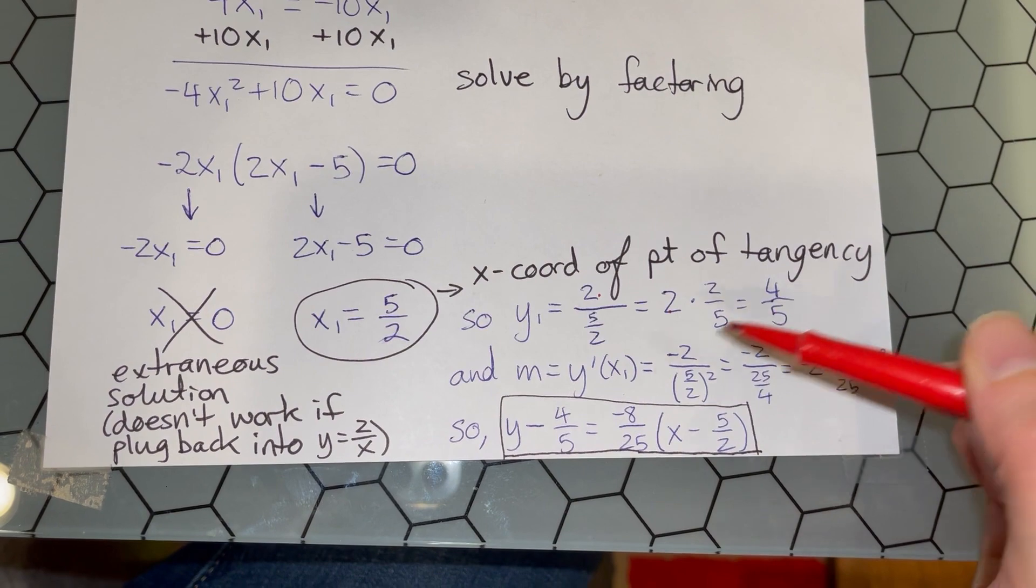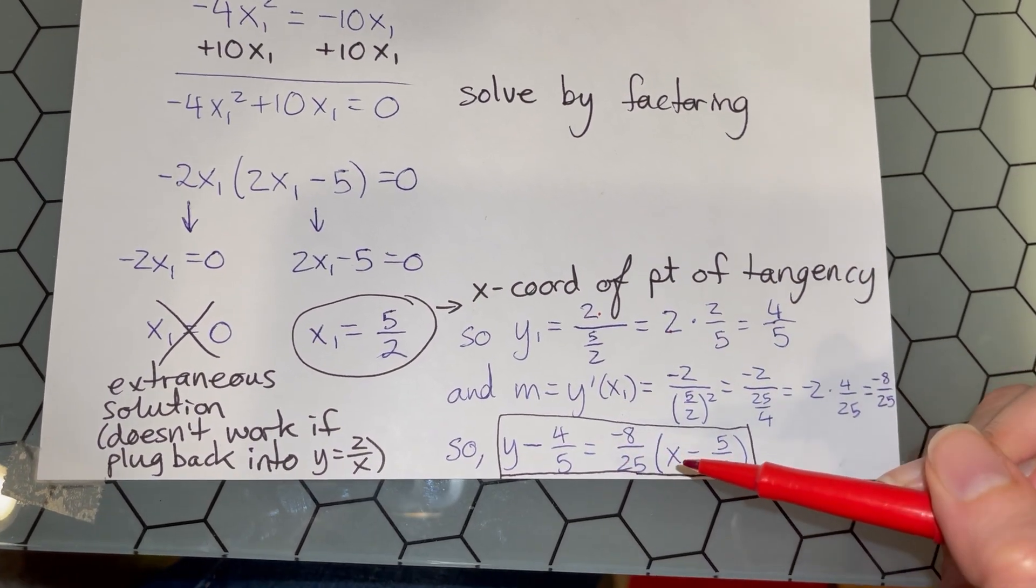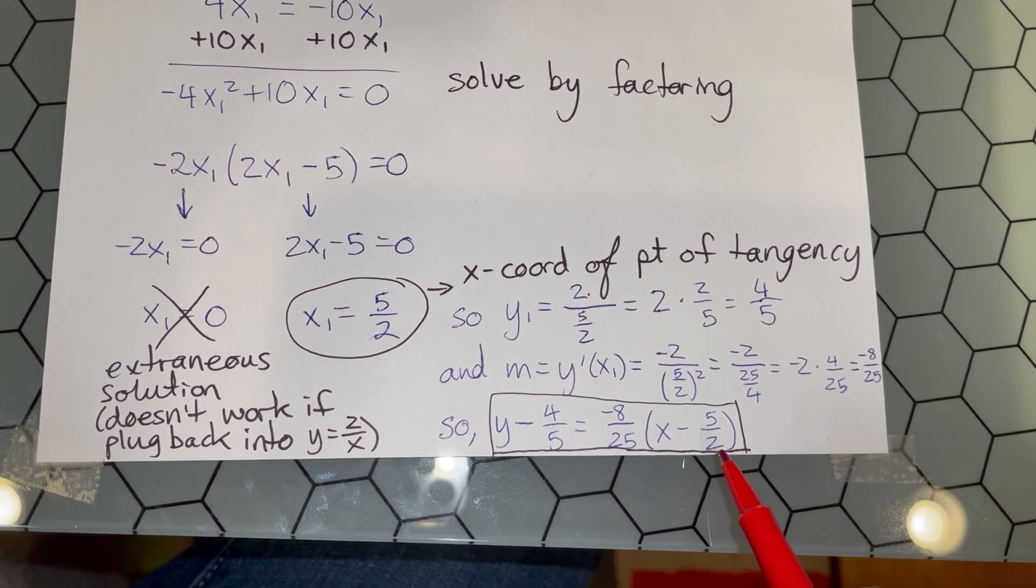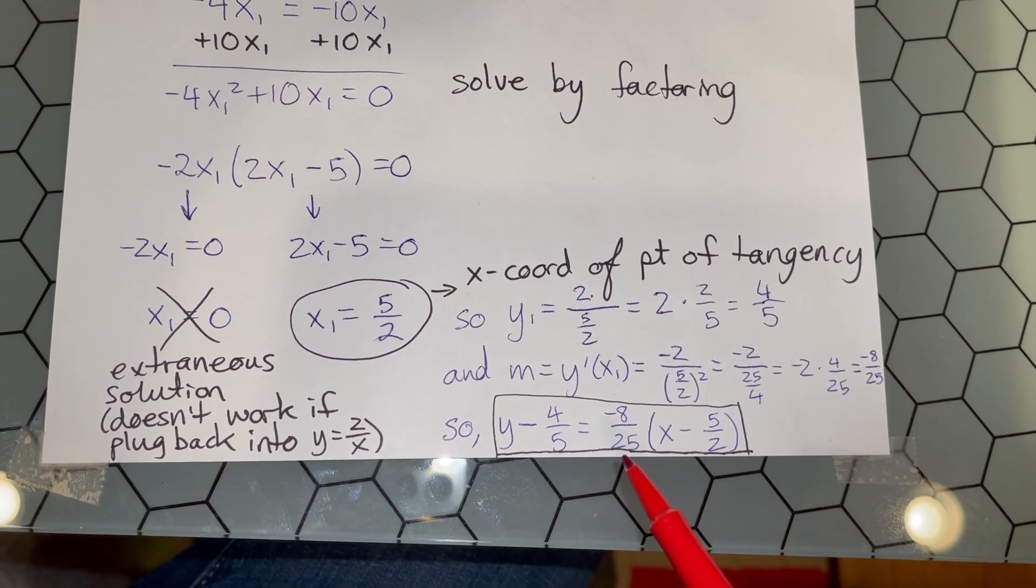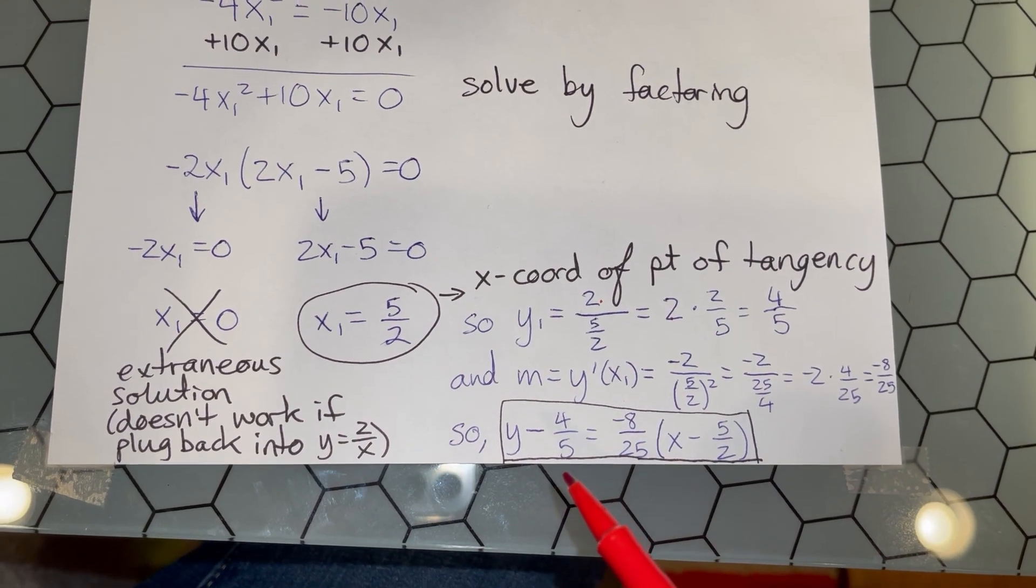Now we have y - y₁ = m(x - x₁). We found x₁ = 5/2, the slope is -8/25, and the y-coordinate where we're building our tangent line is 4/5.